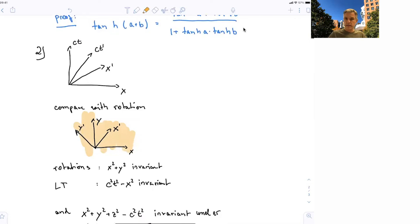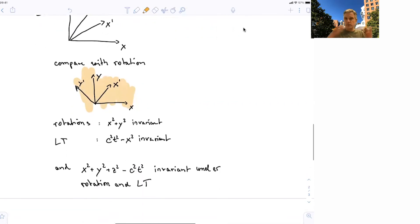In the normal rotational case, x squared plus y squared is invariant. And in our Lorentz transformation, c squared t squared minus x squared is invariant. If you have a more general transformation, the rotation and Lorentz transformation, you find x squared plus y squared plus c squared t squared minus x squared is invariant.